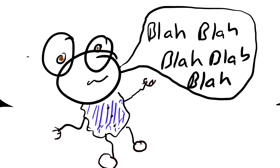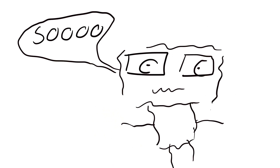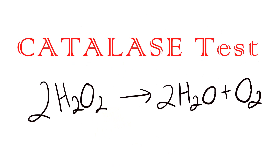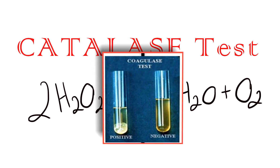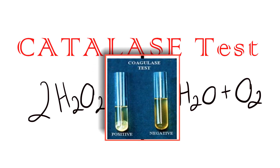The first thing we want to do is distinguish Staph from Strep — that's really the big thing. There's just one test that distinguishes the two, and that's the catalase test. Staph is usually catalase positive; the catalase breaks down hydrogen peroxide into water and oxygen. Once we've distinguished those, we can go further and distinguish Staph aureus from Staph epidermidis and saprophyticus by using the coagulase test.